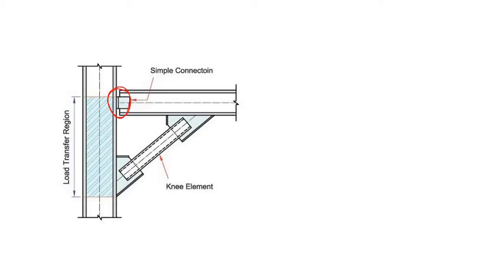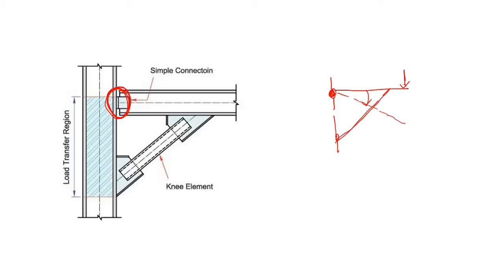The first alternative is to use a pin connection instead of a fixed connection. However, if we use a pin connection and apply a load, it is not stable because the pin allows rotation. So to resist this rotation, we have to apply some extra support member.